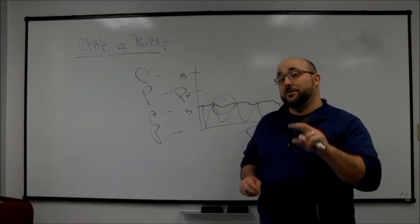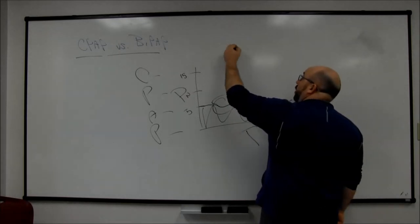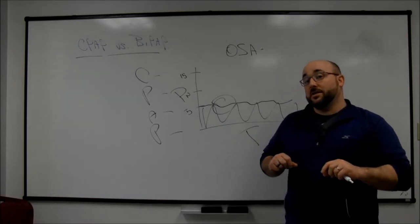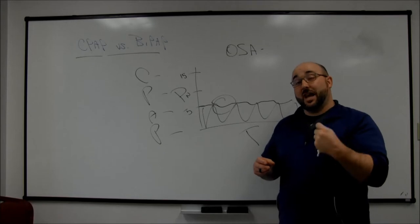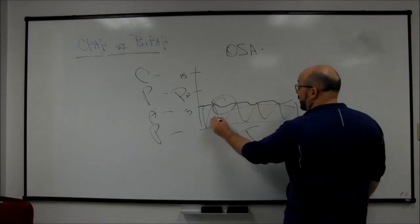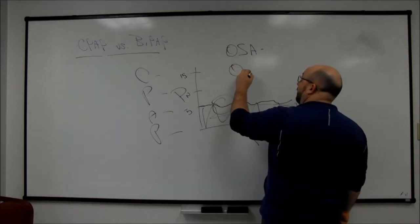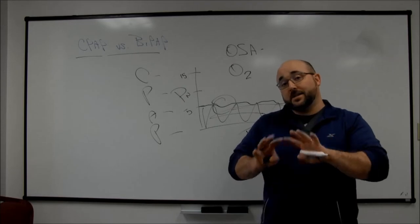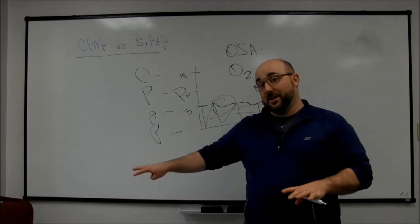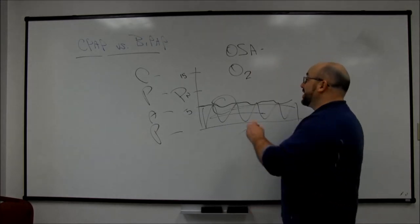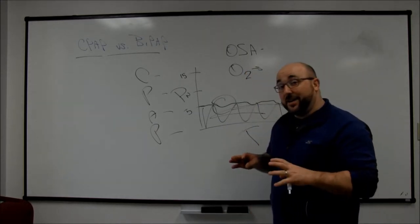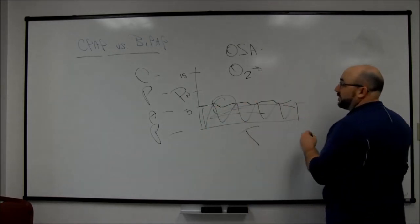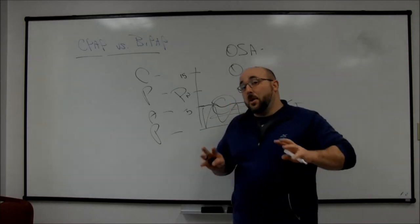CPAP actually does a bunch of different things, but mainly it's going to be used for two main things. Number one: OSA, obstructive sleep apnea. So it's going to splint somebody's airways. When they're sleeping and they go into REM sleep, their airways get loose and floppy. It's going to splint those open with this continuous pressure. Another thing it's going to affect is oxygenation. So it can recruit alveoli. Adding CPAP to somebody who's spontaneously breathing but has oxygenation issues without ventilatory issues can really help to increase the pressure inside the alveoli and recruit some that might be atelectatic.